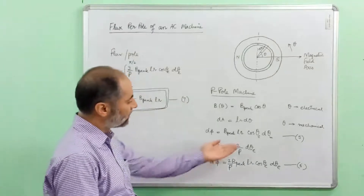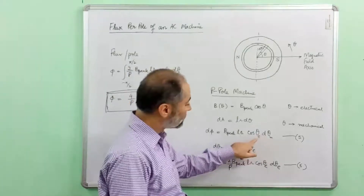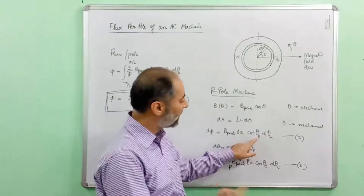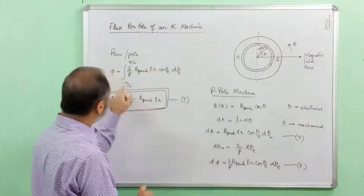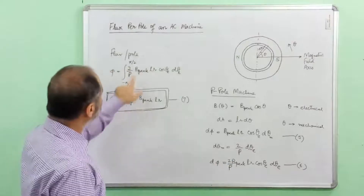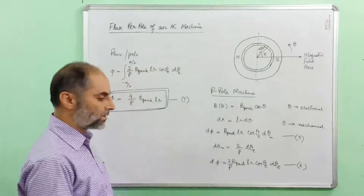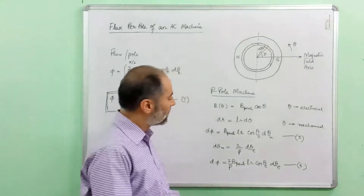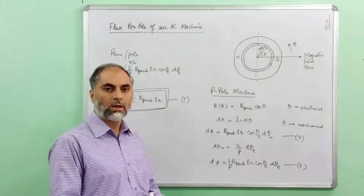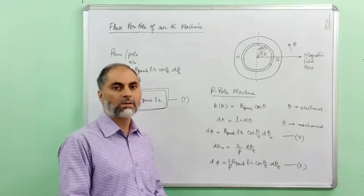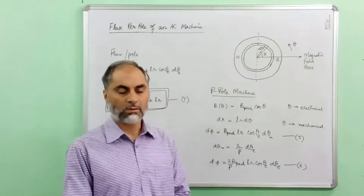We could alternatively have substituted theta E in terms of mechanical angle and adjusted the limits accordingly, multiplying by 2/P, and we would again obtain the same expression. We will take a break here, and in the next lecture we will discuss the basic operating principle of induction machines. Thank you.